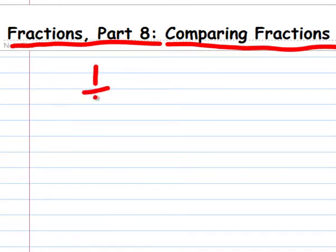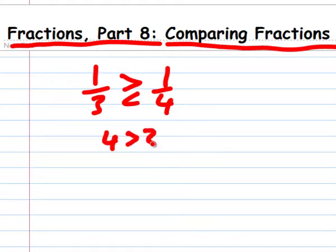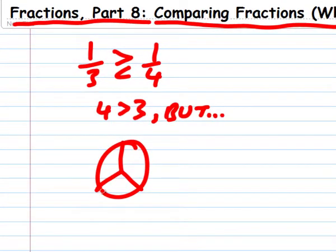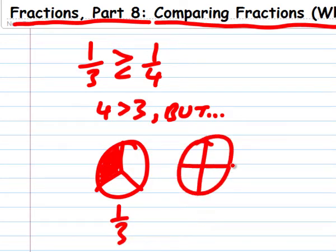Let's try another one. Is one third greater than or less than one fourth? Well, four is greater than three, but let's think this through. One third means that there are three equal parts, and I have one of them, one third. If I break that same whole into four equal parts, each part, each fourth has to be smaller. So one third is greater than one fourth.